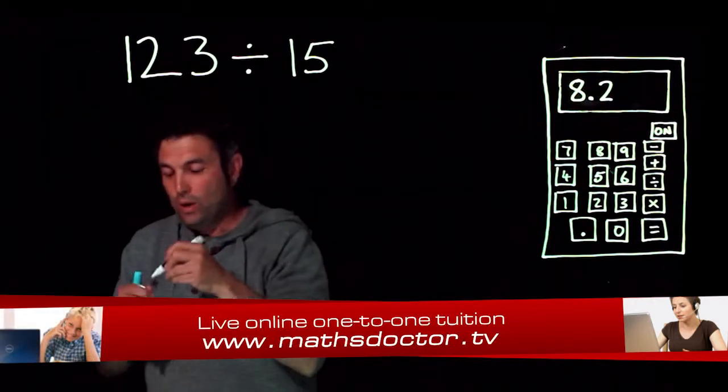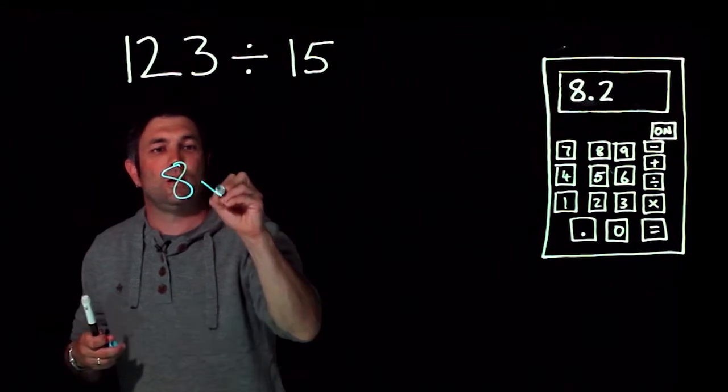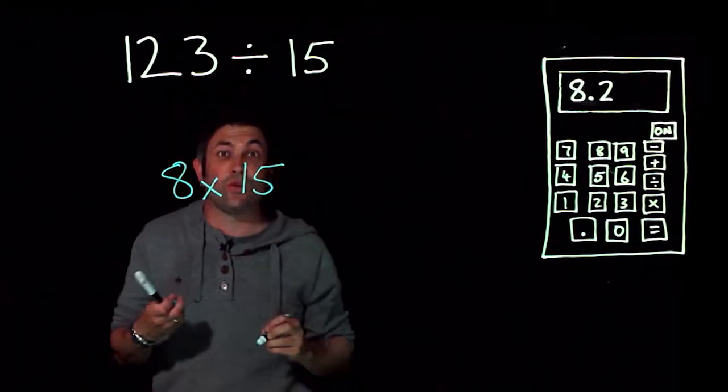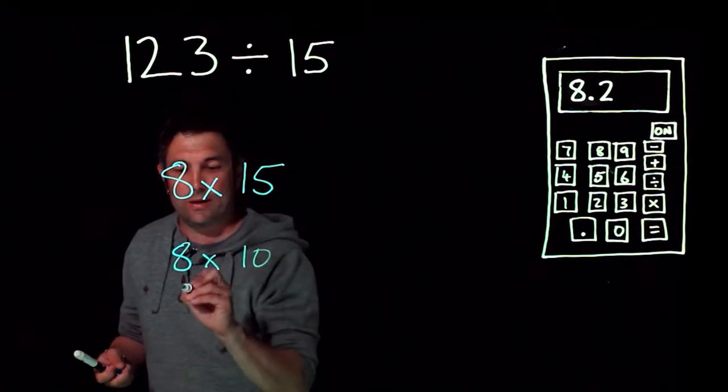So if we do 8 lots of 15, 8 times 15 - now you might think that 8 times 15 is not very easy, so why don't we do 8 times 10 and 8 times 5.